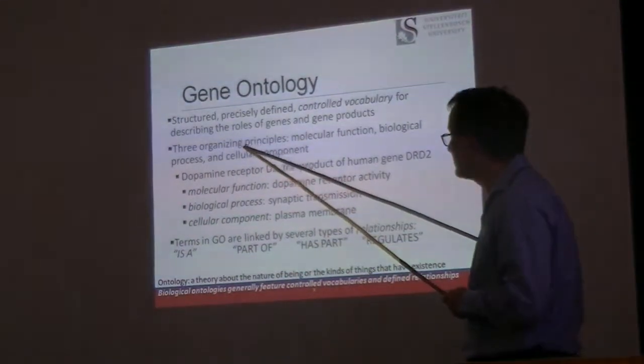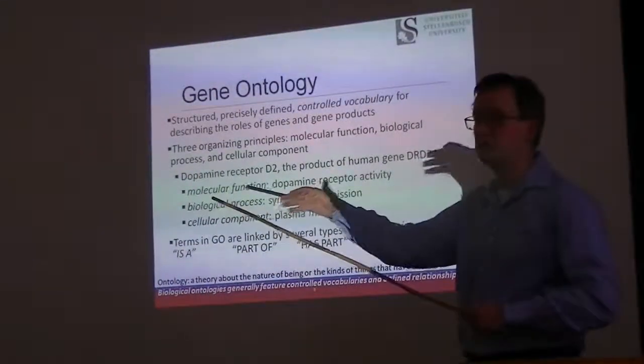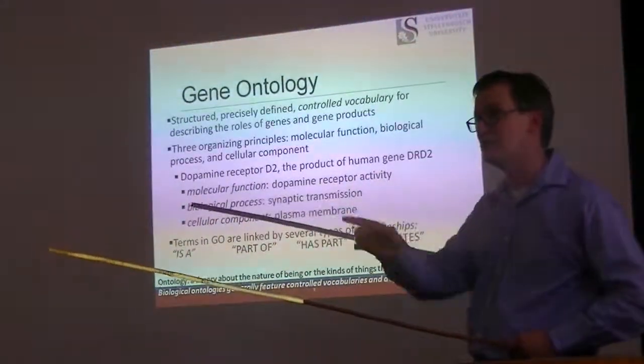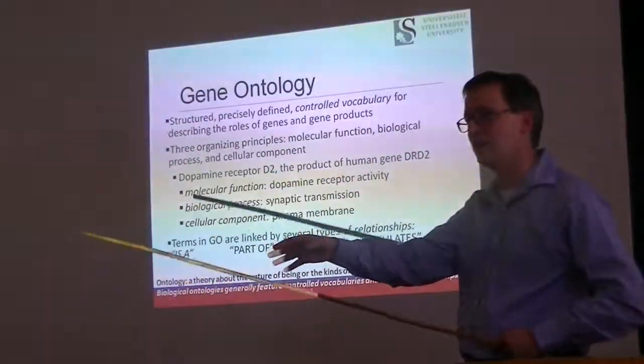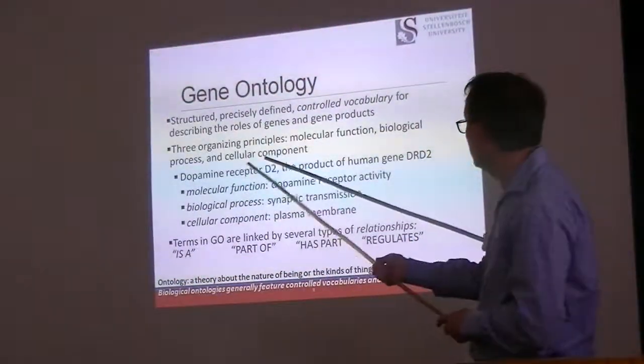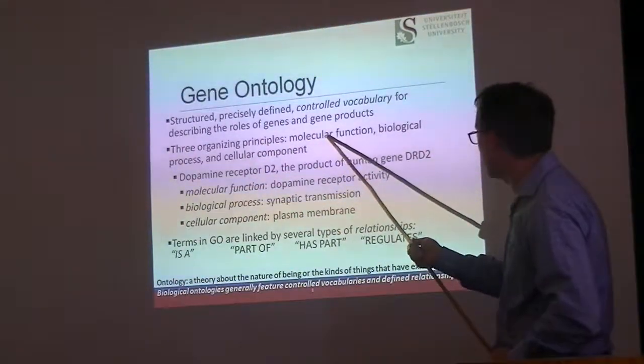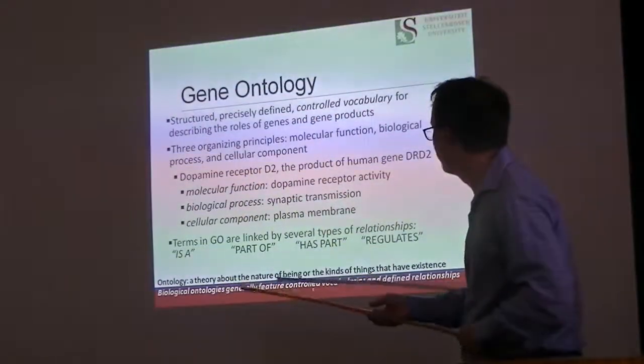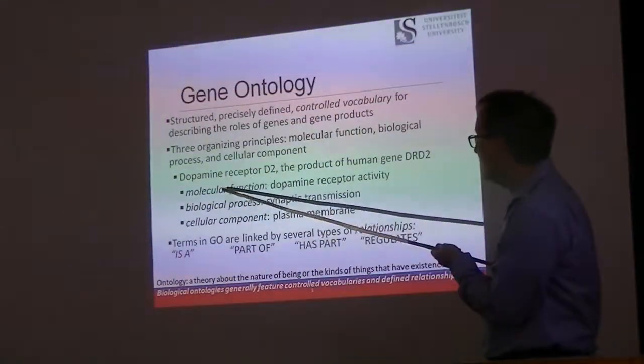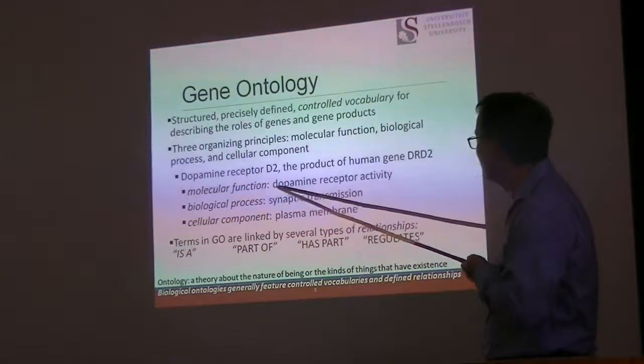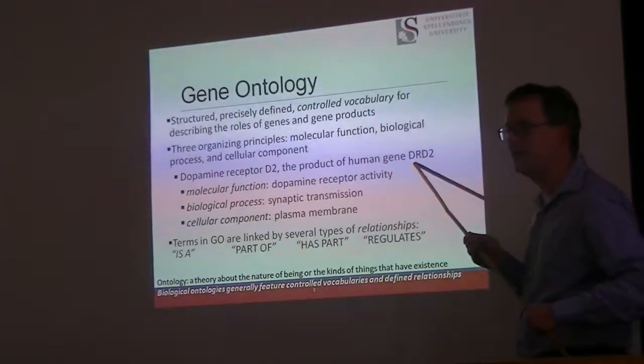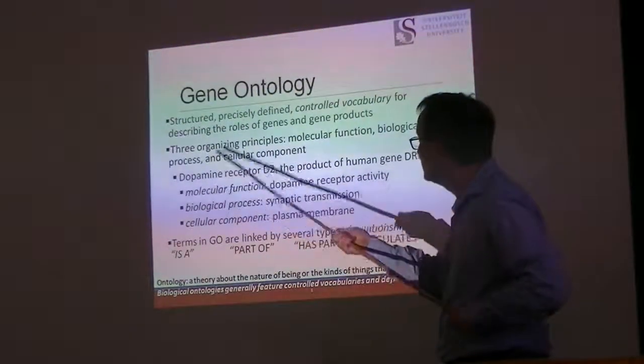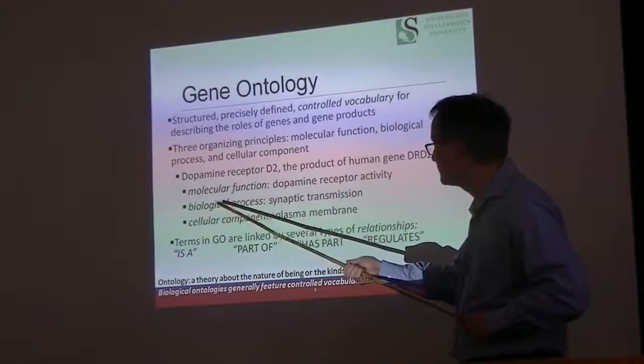There are three different organizing principles, and GO is distributed in all three ways. That is not to say that every gene that has an annotation in one of them has an annotation in the other category. You may find that molecular function is clearer than cellular component, or vice versa. To look at the dopamine receptor D2, we see that it is the product of human gene DRD2.